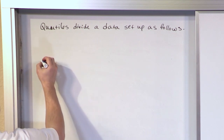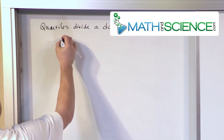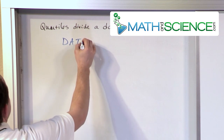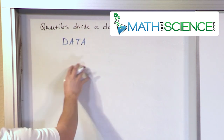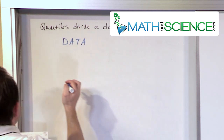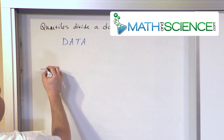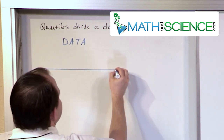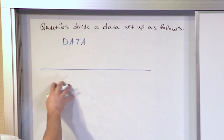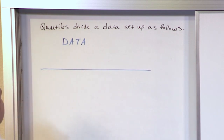Let's say you have some data. So I'm going to say, big letters, data. You have low values, medium values, and high values. So this line right here, this is going to represent all of my data values. I've got some low values, some medium values, and some high values.